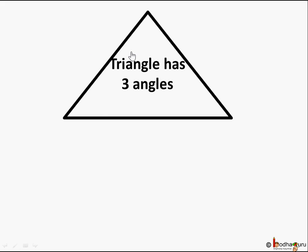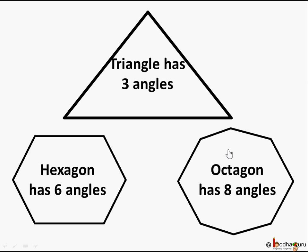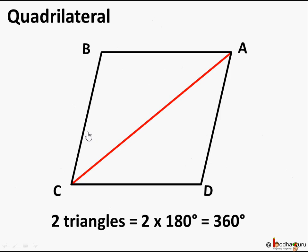A triangle has three sides and three angles. A hexagon has six sides and six angles. An octagon has eight sides and eight angles. A nonagon has nine sides and nine angles, and so on. How can we generalize what the sum of all interior angles of any generic polygon will be?